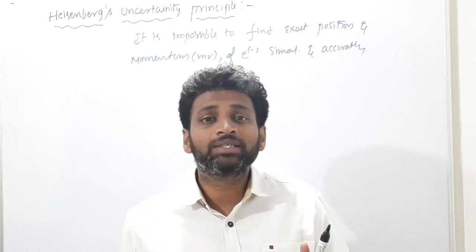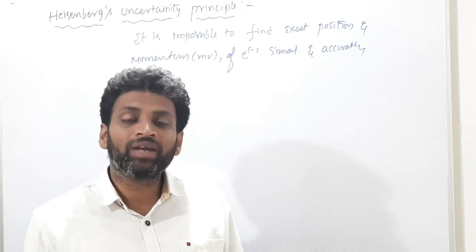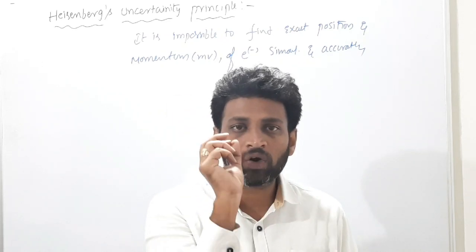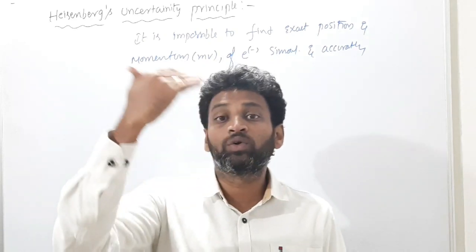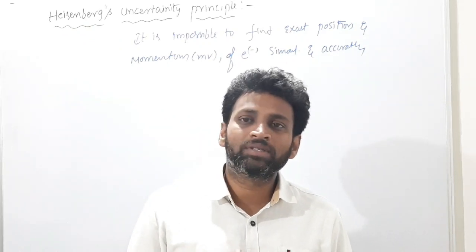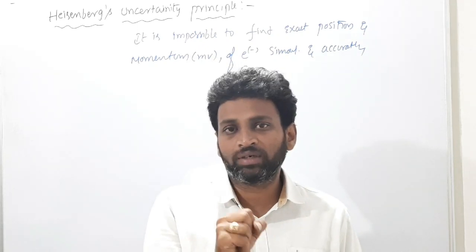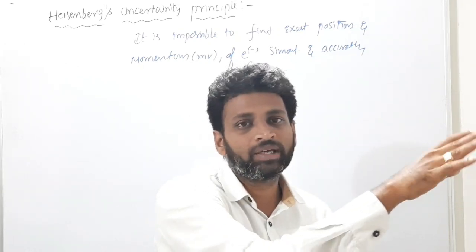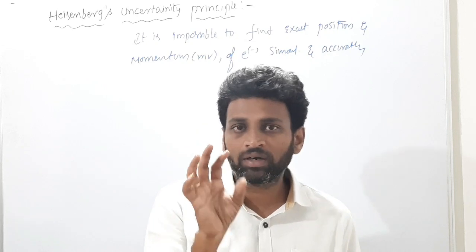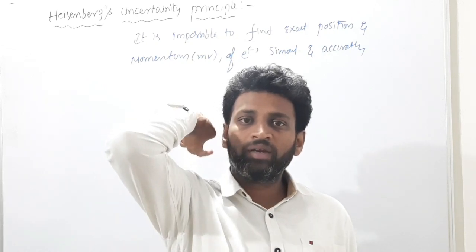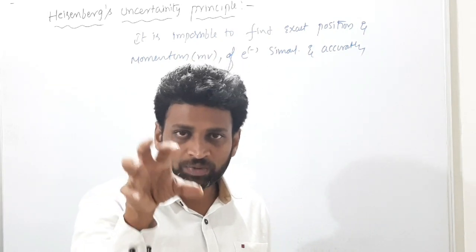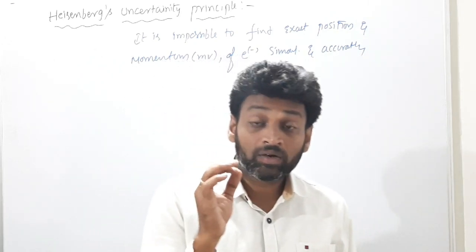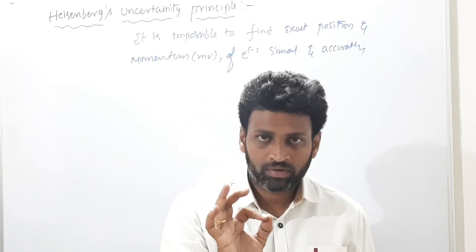But you can give what the uncertainty is. We cannot find exact position and momentum because the electron is moving with high speed in circular orbits and it is not only revolving in one particular orbit — it is jumping from one orbit to another orbit. If you take a cricket ball, you know its path because it moves in one particular direction only.